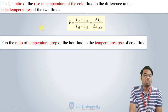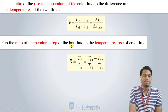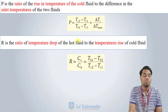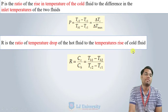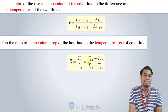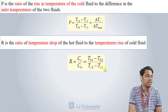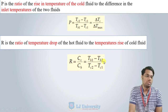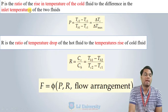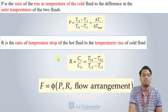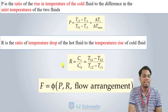R is the ratio of the temperature drop of the hot fluid to the temperature rise of the cold fluid. Since the hot fluid loses heat to the cold fluid, R = (TH1 − TH2) / (TC2 − TC1), where TH1 − TH2 is the temperature drop of the hot fluid and TC2 − TC1 is the temperature rise of the cold fluid.